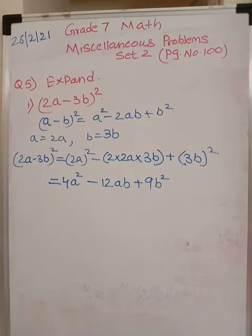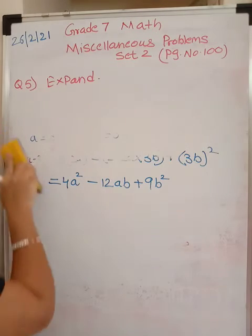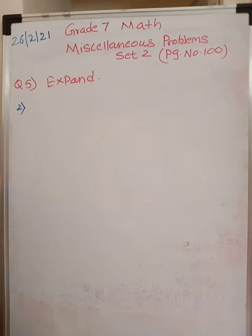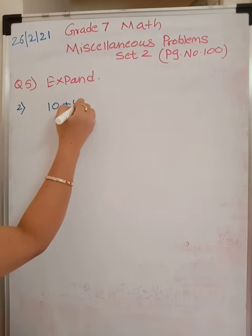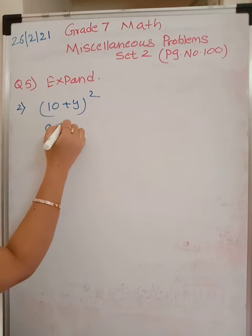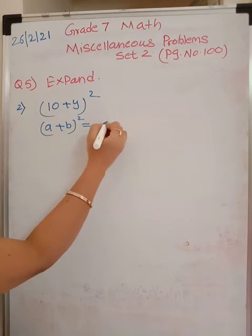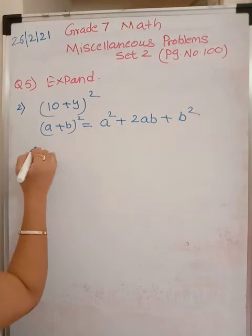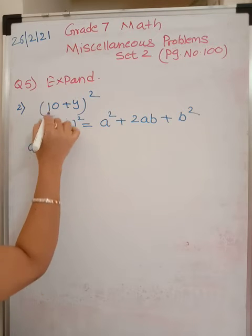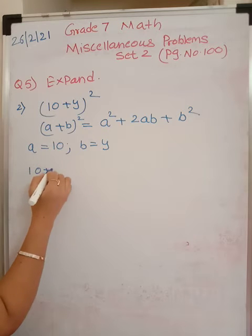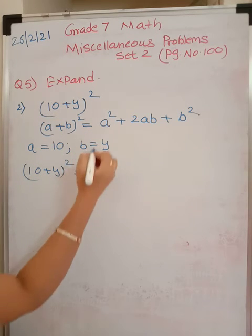Let us go to the second problem from expand. So, second problem from expand is (10+y) the whole square. (10+y) the whole square. Which formula are we going to use now? Plus is there. So (a+b) the whole square. What is the expansion? a² + 2ab + b². Write what is a? Your a is 10. Isn't it? And your b is y.